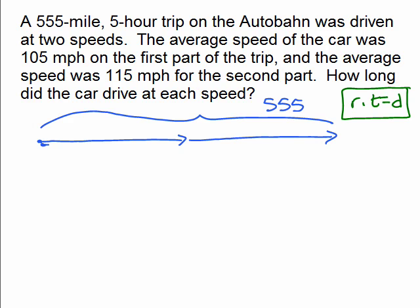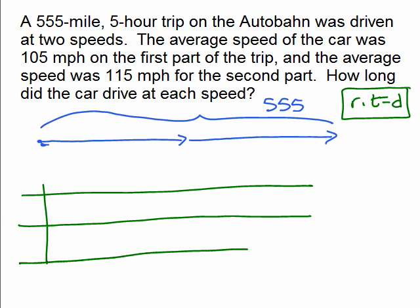But the car was driven at two speeds. So the first part of the trip, it was going 105 miles per hour. And the second part of the trip, it was going 115 miles per hour. So we want to do a little chart. Let's just talk about the first and the second part of the trip. There's a rate for the first part, a time for the first part, and a distance, and the same thing for the second part of the trip.